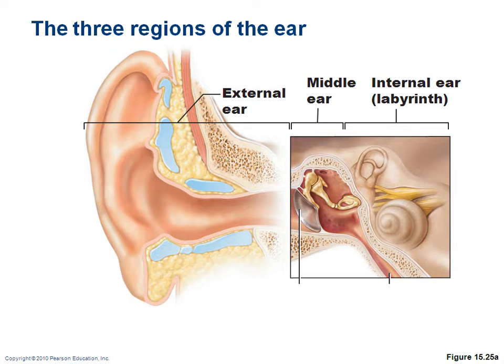The middle ear contains the bones: the malleus, the incus, and the stapes. The internal ear is a bony labyrinth inside your temporal bone, and we'll take a closer look at that.